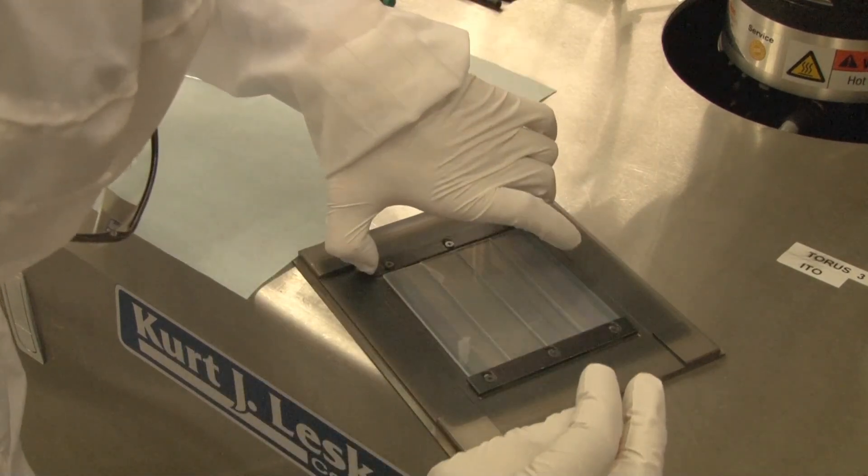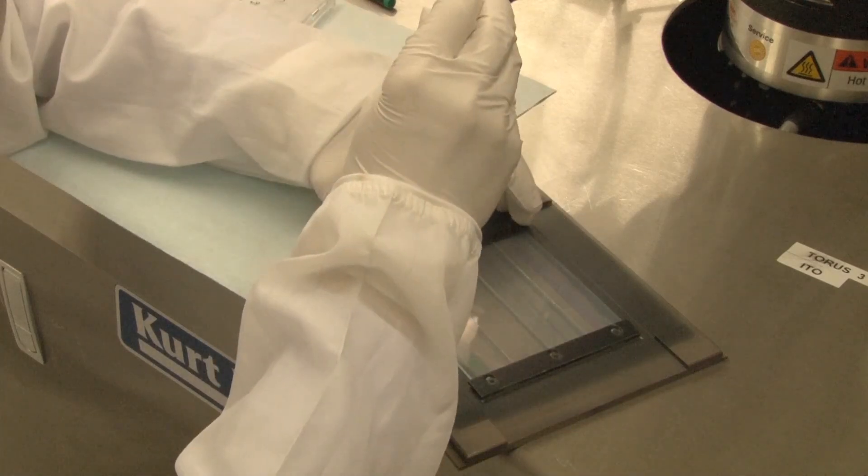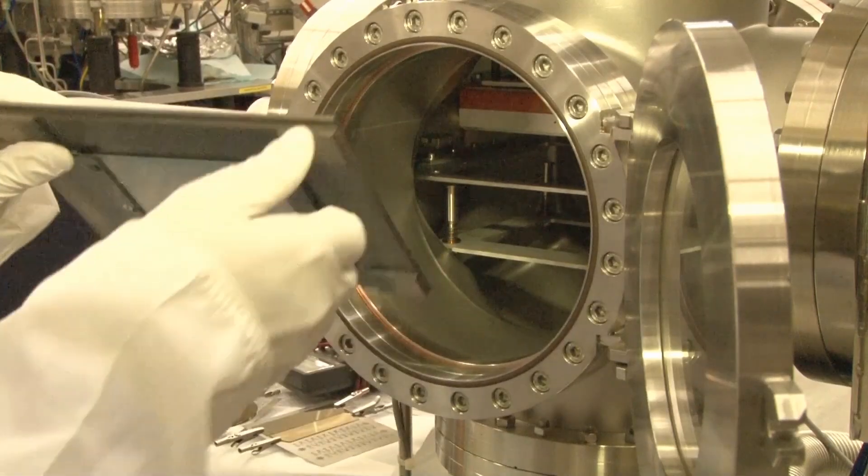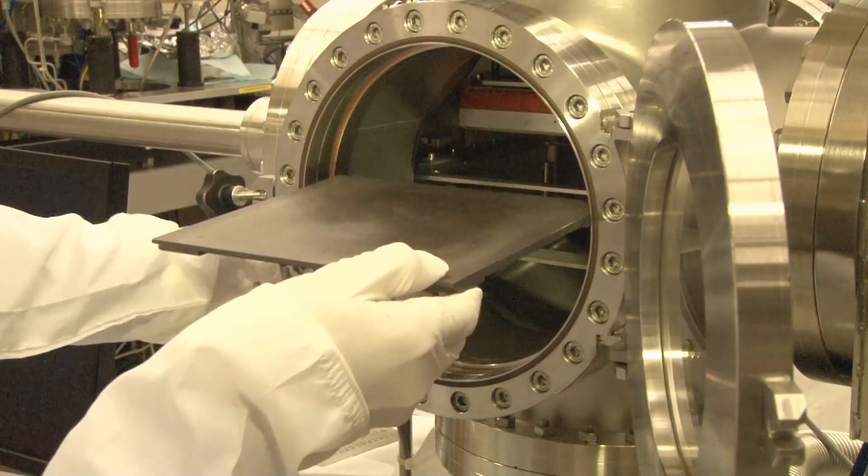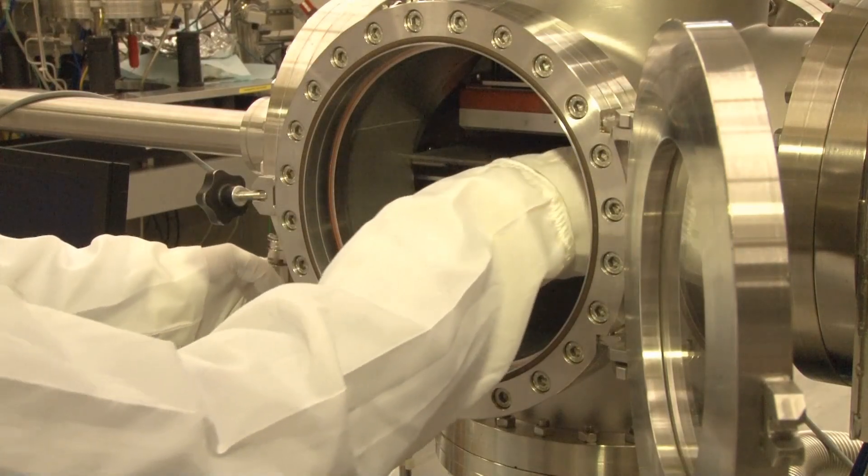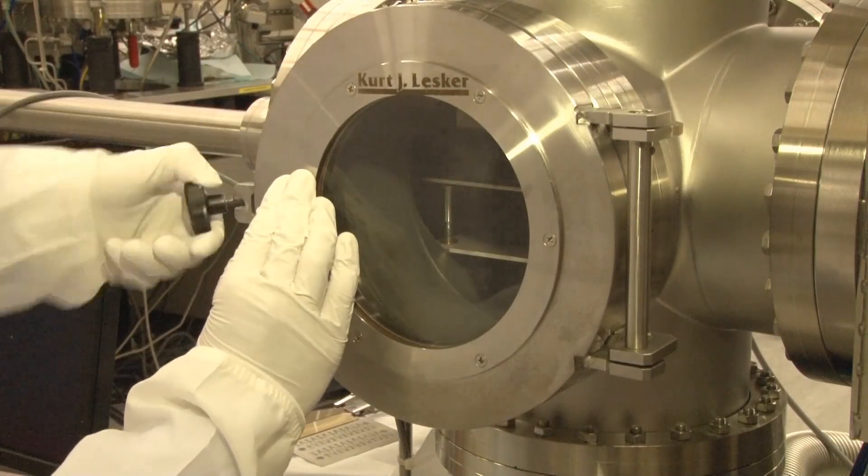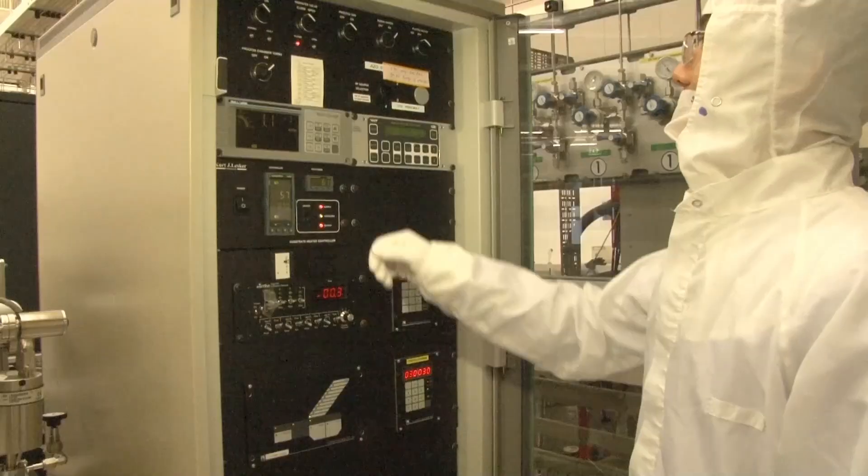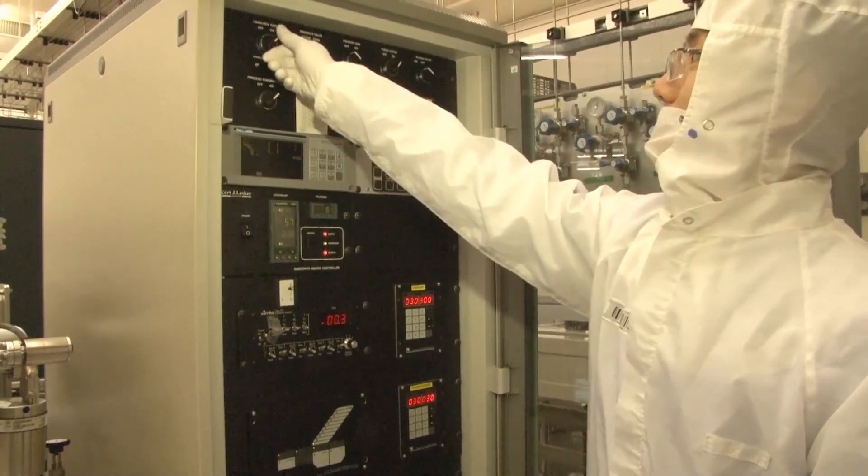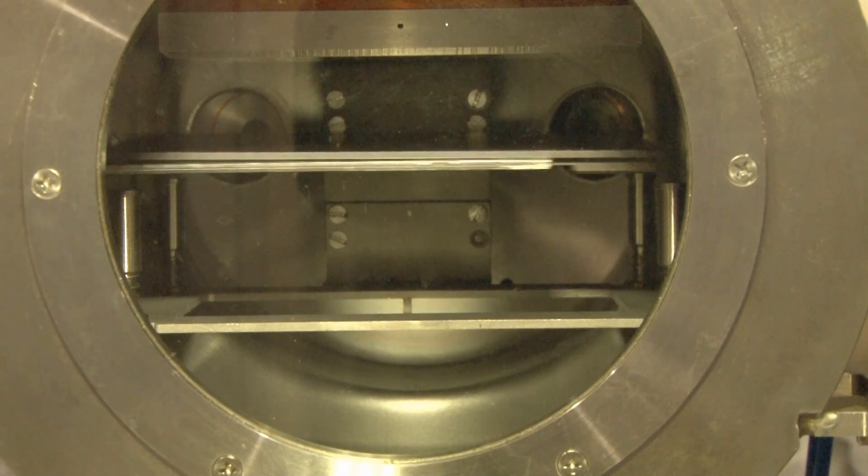In this movie, we deposit a thin zinc oxide layer on top of the Asahi substrate to protect the tin oxide from the next processing steps. The substrate is mounted on a sample holder and put into a load lock. A load lock is a chamber in which the substrate is brought under low pressure before it is moved into the processing chamber.